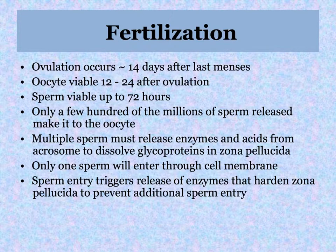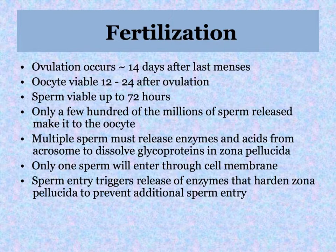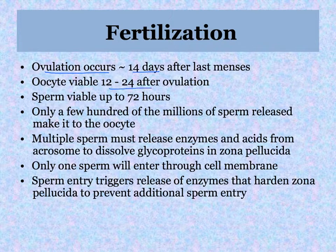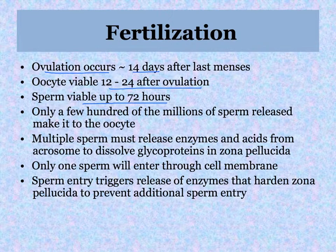Let's start with fertilization. You need a mature oocyte from the mother and mature sperm cells from the father. Ovulation typically occurs about halfway through a menstrual cycle, roughly 14 days into the cycle. The oocyte is viable and able to be fertilized for about one day after ovulation. Sperm can be viable for up to three days, so there is a small window for successful fertilization.